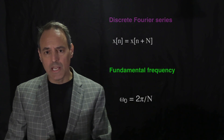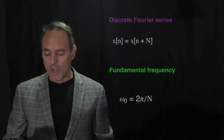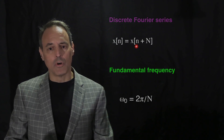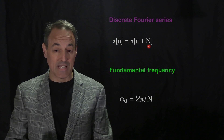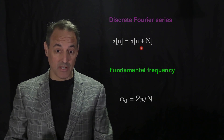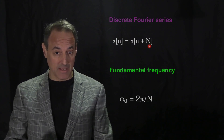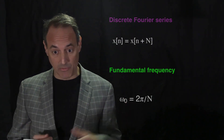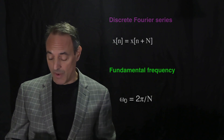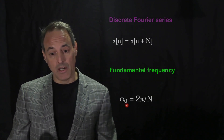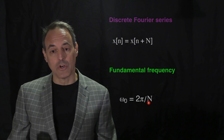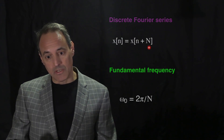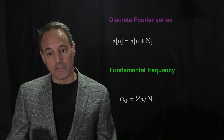Now we switch to the discrete case. In the discrete Fourier series, we're thinking about a periodic signal x(n), where x(n) = x(n + N), so N is the period. If I march forward N steps I get back to exactly where I was. We have a fundamental frequency ω₀ = 2π/N, so whatever the number of steps needed to return to the start determines the fundamental frequency.